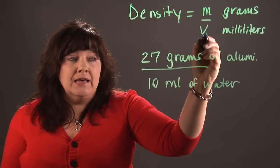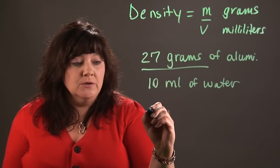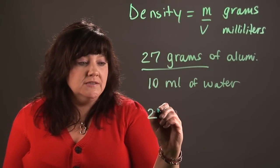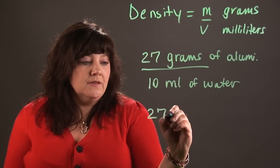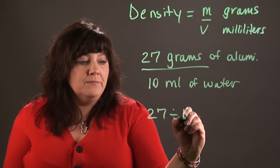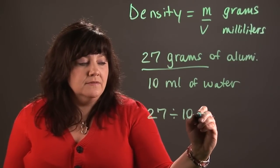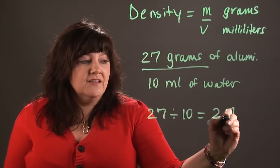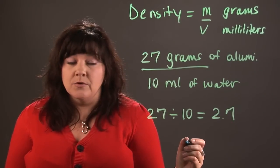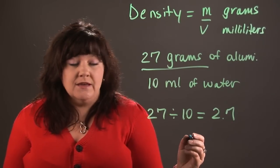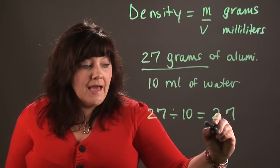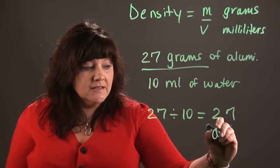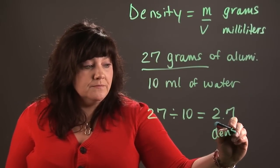Remember, density is mass divided by volume, so I would take 27, divide it by 10, and that's going to give me 2.7, and that is in fact the density of aluminum.